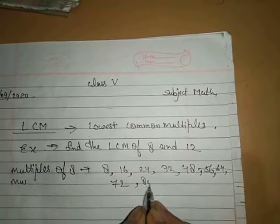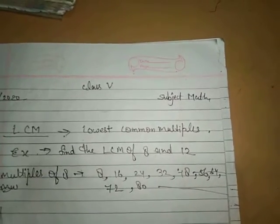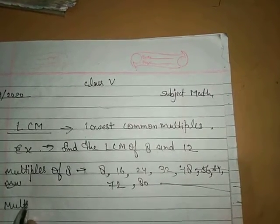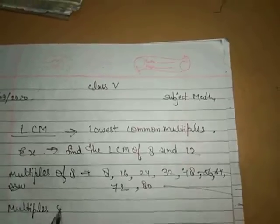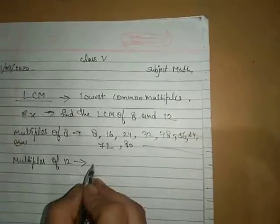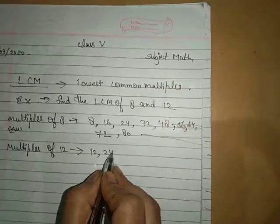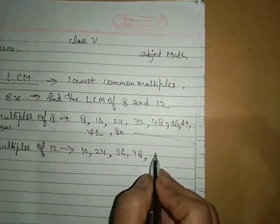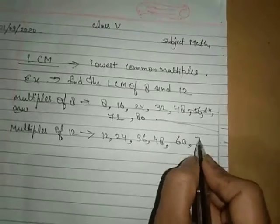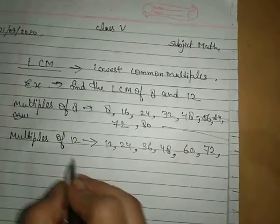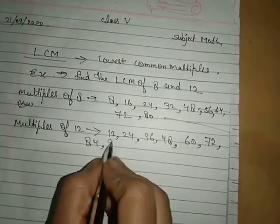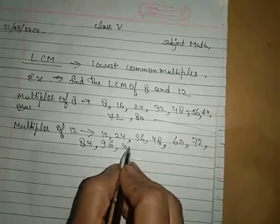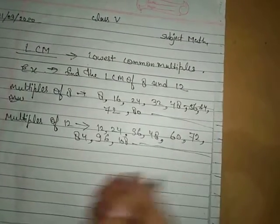Multiples of 12 are 12, 24, 36, 48, 60, 72, 84, 96, 108, and so on.